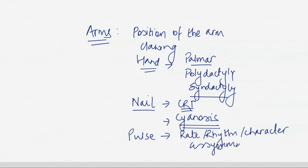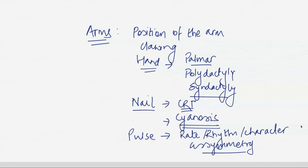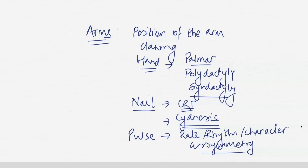When checking for asymmetry of the pulse, you are looking for radio-radial delay or radio-femoral delay, which means checking the other hand and the femoral pulse. In an online exam, how you say things matters as much as what you say — framing sentences beforehand is essential. If you only plan the content but not the actual sentences and words, you will struggle with time management. Practice to the level of specific words and sentences, especially since English may not be your first language.